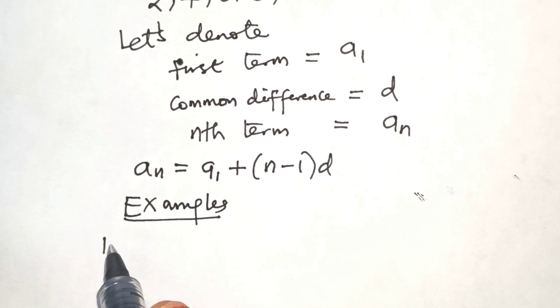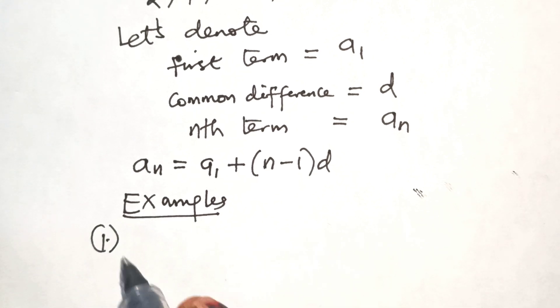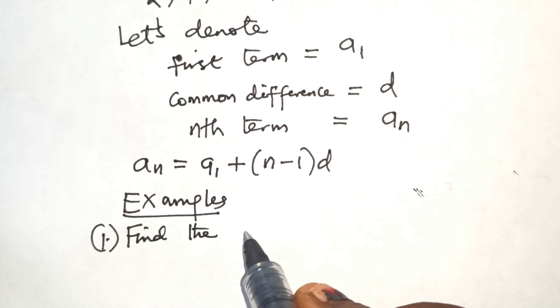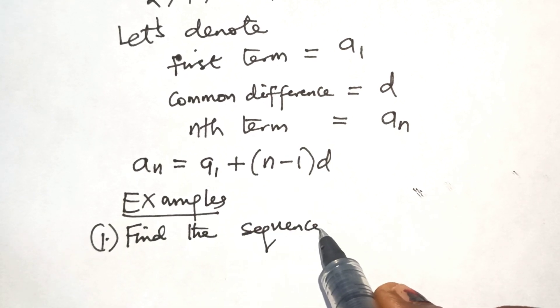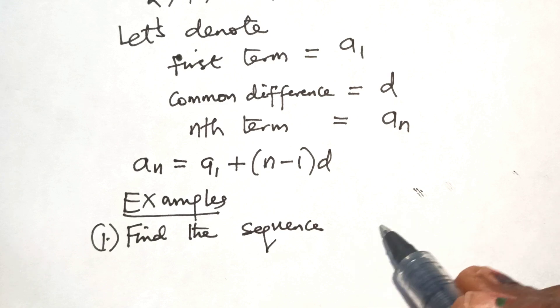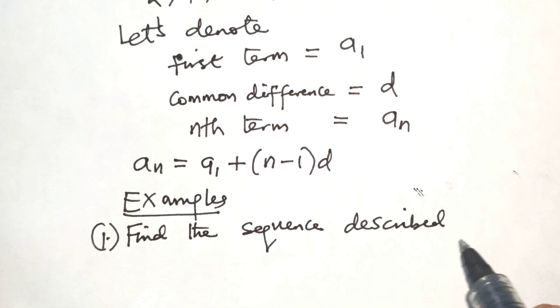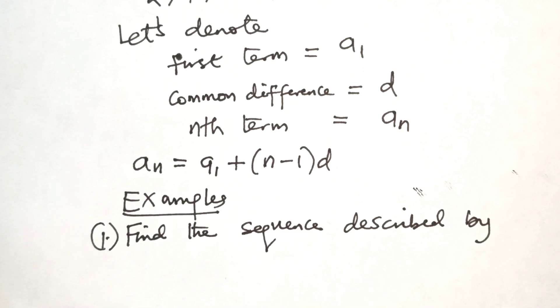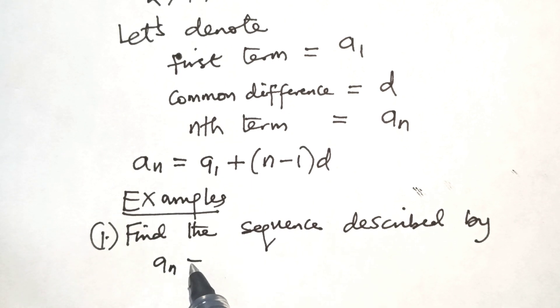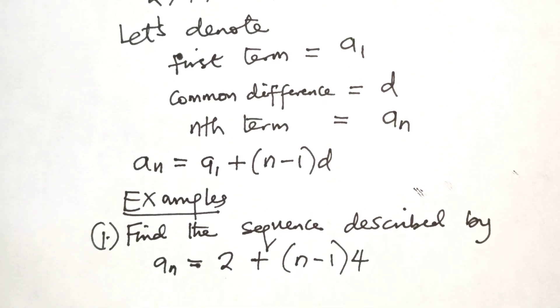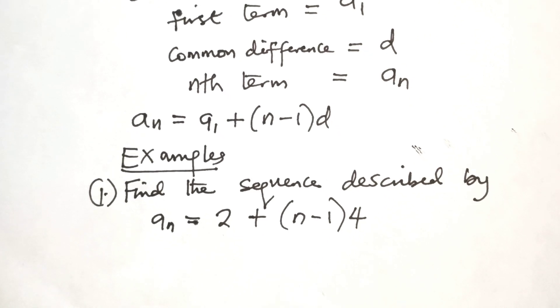Example 1. Find the sequence described by AN equals 2 plus N minus 1 times 4. Now let's solve this.